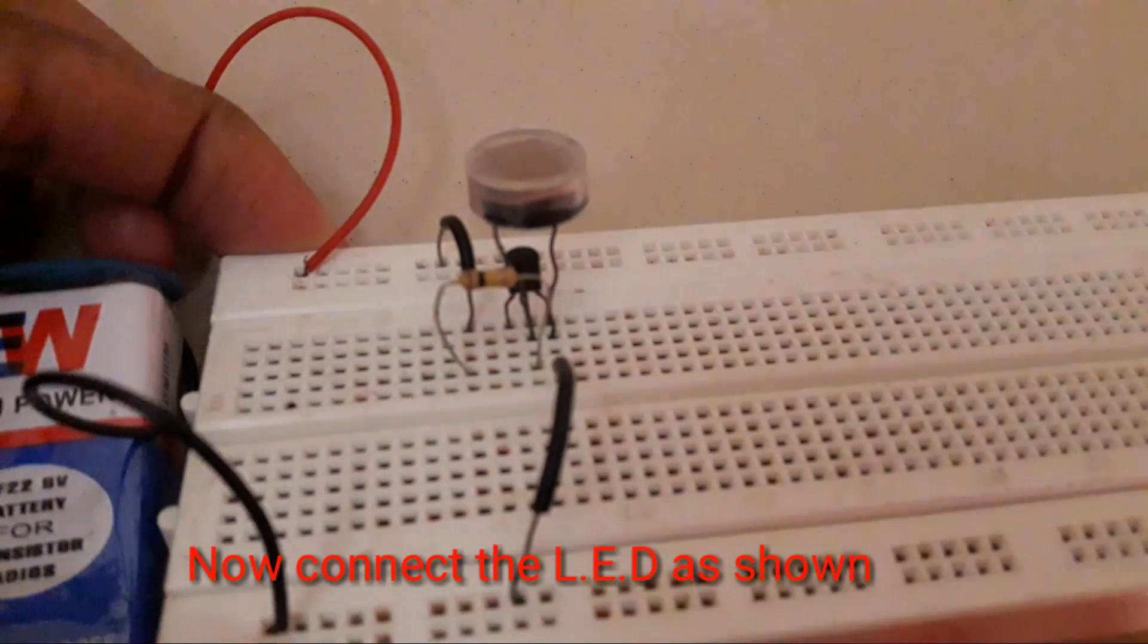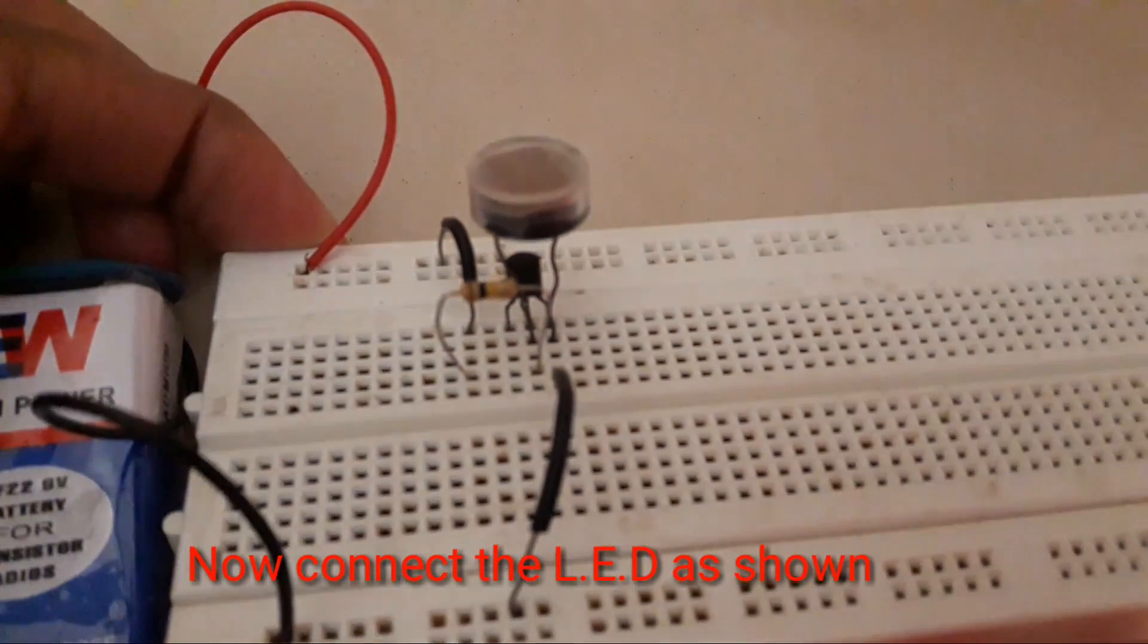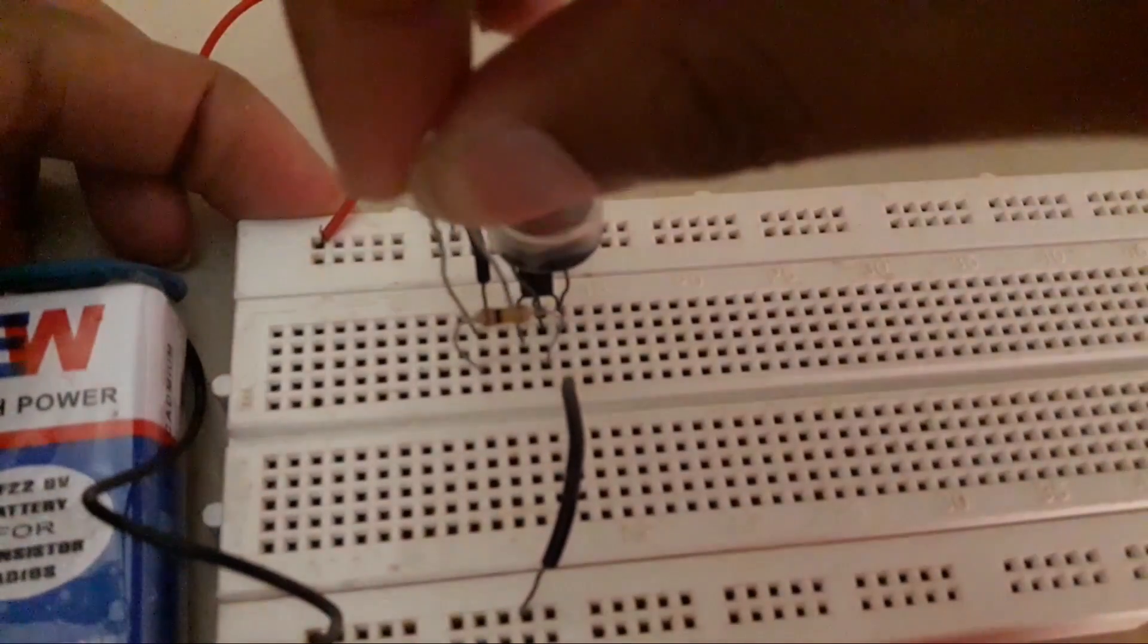Connect the cathode of the LED to the collector of the BC 547 transistor and the anode to the positive rail.